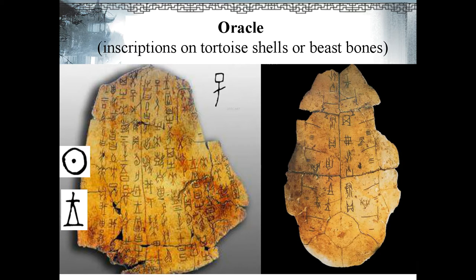Take a close look and we may find the pictographs: Zi, Ri, Wang. Zi looks like an infant in the swaddle with a big head and arms. Ri is the sun — we can see a circle with a dot in the middle, just like the glaring sun. Wang means king in the shape of a ritual object used in sacrificial ceremony, symbolizing the authority of the king.